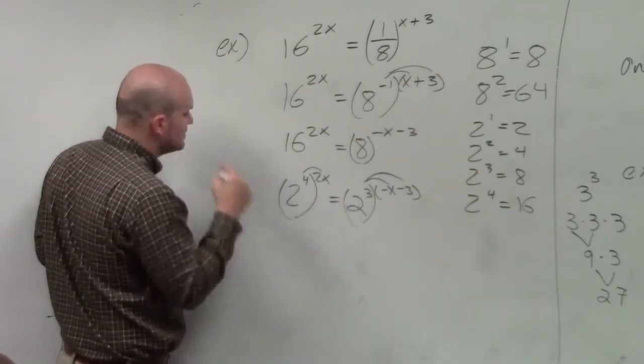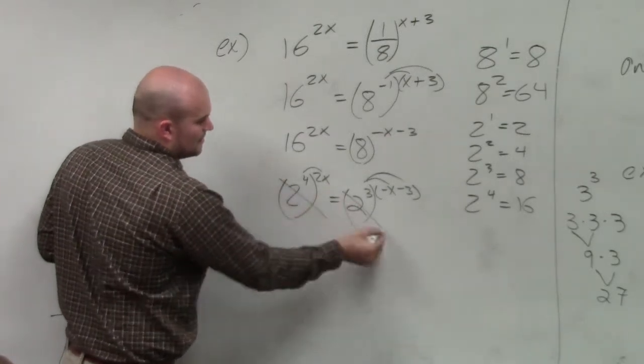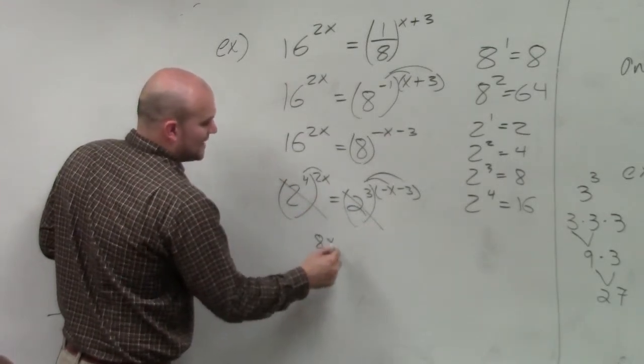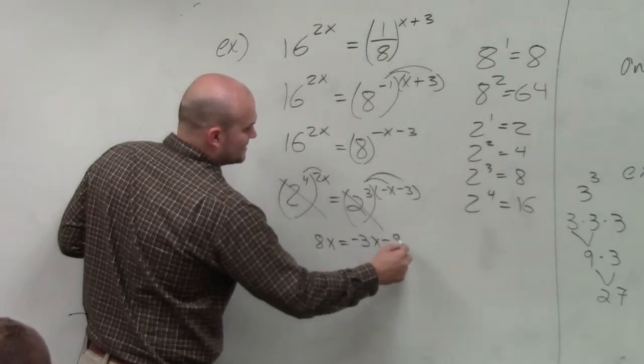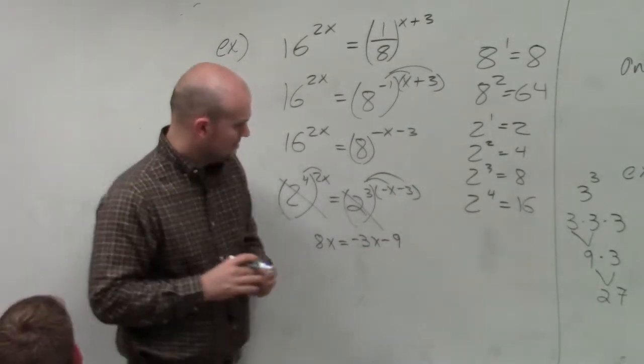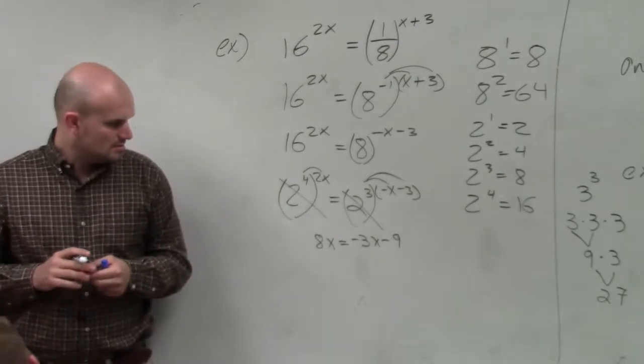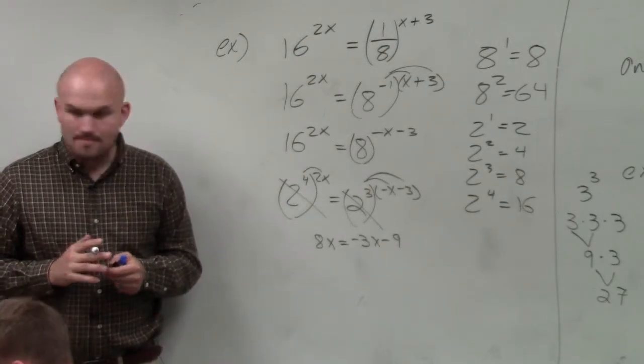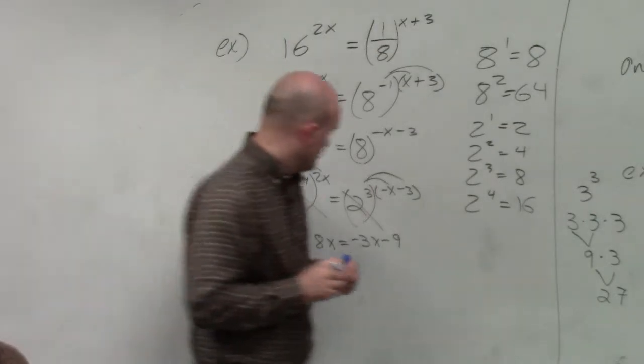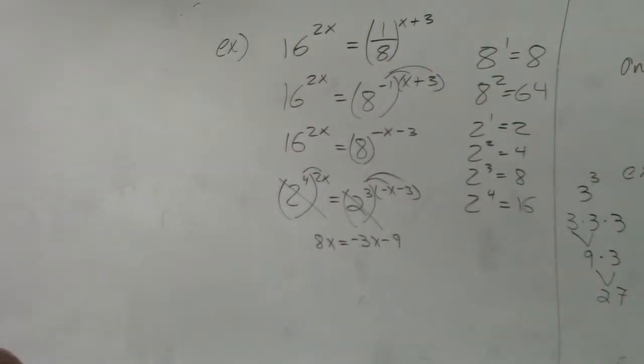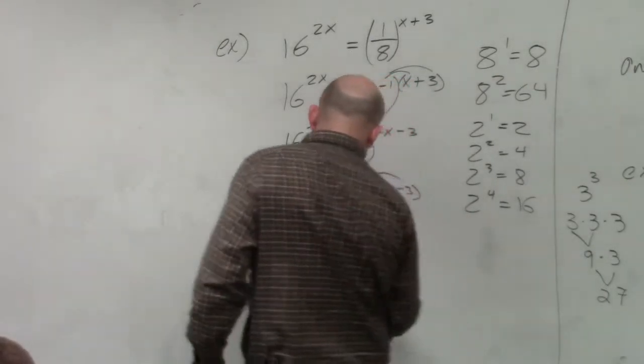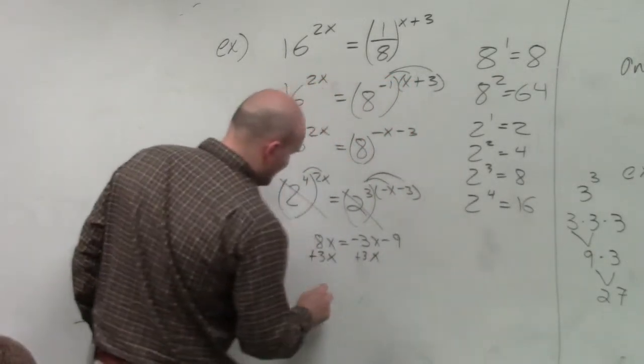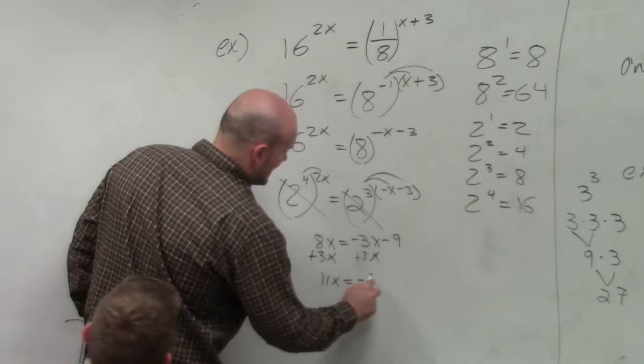Can I delete out the bases or just cancel them out? Well, so therefore, I'm left with 8x equals negative 3x minus 9. Is that true? Wait, you're going to add? No, you're going to add 9 on both sides, right? No, you're going to add 3x on both sides. I would add a 3x on both sides. I'd get the x's on the same side. Therefore, I get 11x equals negative 9.